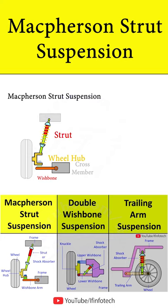The MacPherson strut system has a simple design, low manufacturing cost, and is lighter than the double wishbone system. It gives maximum space in the engine compartment, and hence it is used in four wheel drive vehicles.